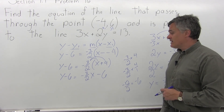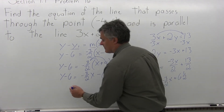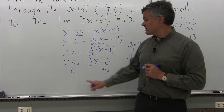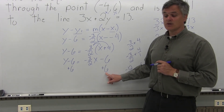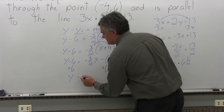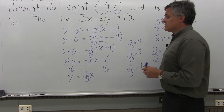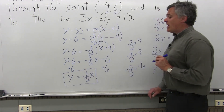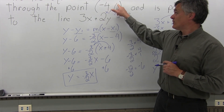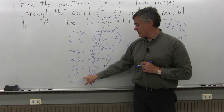To finish, I have y minus 6 on the left and I just want y. Adding 6 to both sides: on the left, minus 6 and plus 6 cancel, giving y. On the right, negative 3 halves x minus 6 plus 6 — the 6's cancel too. So the final answer is y equals negative 3 halves x. That's the equation of the line that passes through the point negative 4, 6 and is parallel to 3x plus 2y equals 13.